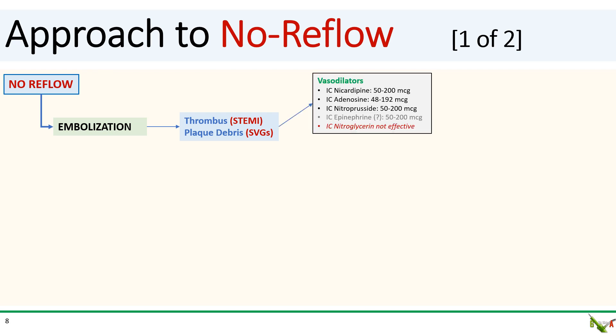The mainstay of treatment are vasodilators. Remember that nitroglycerin, which is often used, is actually not very effective at treating no reflow. IC calcium channel blockers are effective. I typically use IC nicardipine at boluses of 50 to 200 micrograms, depending on the patient's blood pressure. Pre-administration of IC nicardipine may actually reduce the incidence of no reflow in rotoblader and saphenous vein graft cases. IC adenosine is also useful, and there is some evidence that IC epinephrine at doses from 50 to 200 micrograms could be effective.